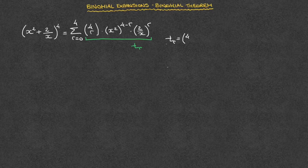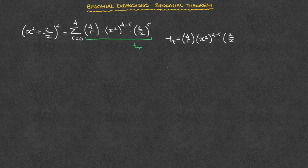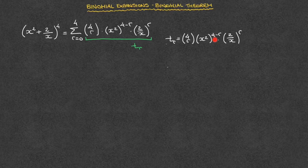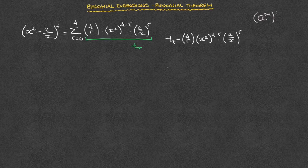That's t sub r, which equals the binomial coefficient 4r, times, in parentheses, x squared raised to the power of 4 minus r, times, in parentheses, 2 over x raised to the power of r. The first thing we need to do is distribute these powers across these parentheses. Looking at this first pair of parentheses, we can see that we have x squared inside them, and they're being raised to the power of 4 minus r. To distribute this correctly, we use the law: any number a raised to a power m, which is then raised to the power n, equals a raised to the power of m times n. In other words, this power of 4 minus r multiplies the power of 2 on the x.